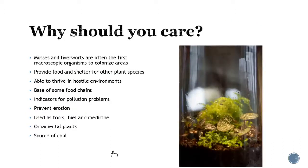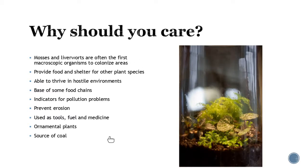Why should you care? Mosses and liverworts are often the first macroscopic organisms to colonize areas — we'll talk about pioneer species when it comes to ecology. A lot of these plants provide food and shelter for other plant species and thrive in hostile environments first, which is really important because the first pioneer species start to establish things and break down the soil into smaller nutrients so other organisms can come through. They form the base of a lot of food chains and are indicators for pollution problems. They are essential for prevention of erosion since they're located primarily close to the ground. We use them for tools, fuel, medicine, and ornamental purposes, and they are also a source of coal, as mentioned earlier. Lots of diversity and essential uses for these simple little plants.